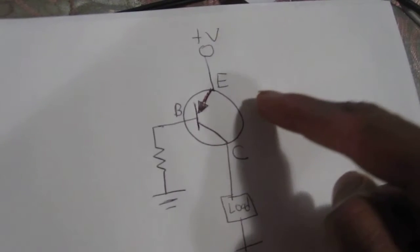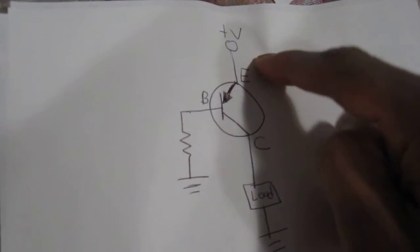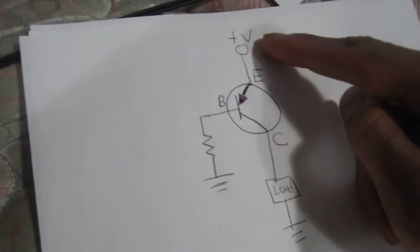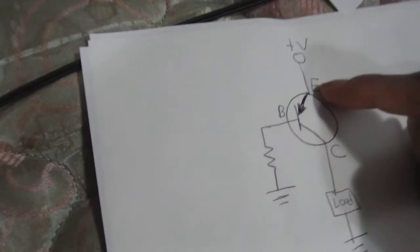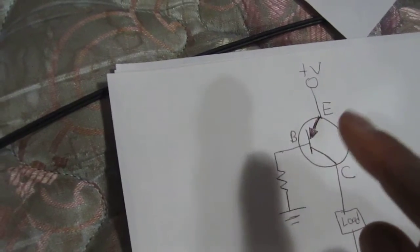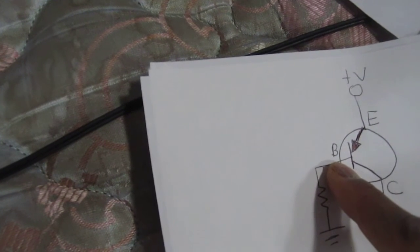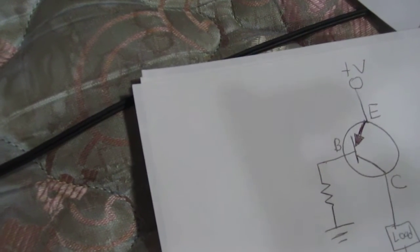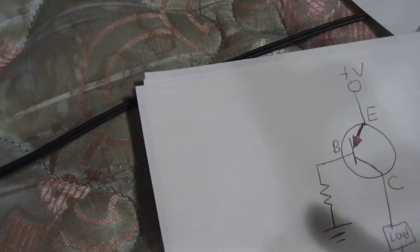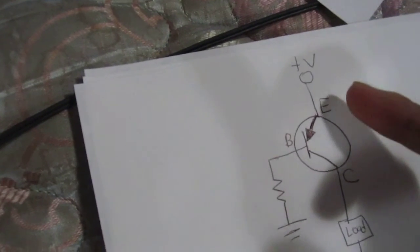A PNP transistor is different from an NPN transistor in that we connect the positive voltage supply to the emitter terminal. To the base terminal, we connect a voltage that is lower or more negative than the voltage we connect at the emitter terminal.